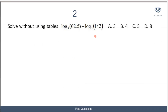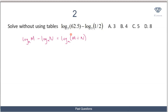Now let's move on to the next question: solve without using tables, log 62.5 minus log(1/2), all to base 5. If you recall the law of logarithms, when we have a minus sign we divide: log m base a minus log n base a equals log(m/n) base a.